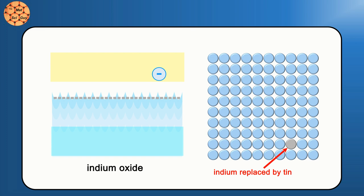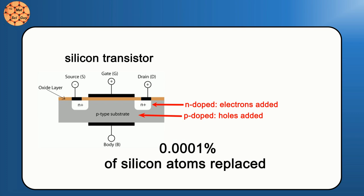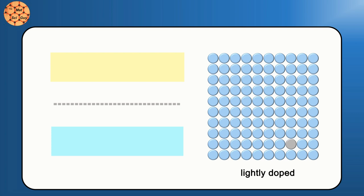This doping process is used to create all sorts of electronics like transistors, but in those cases the doping level is usually relatively light. For example, in silicon electronics, the highest concentration of the doping you'll typically see is about 0.0001%, or one in every hundred thousand atoms. On the other hand, ITO is heavily doped, very heavily doped. About 10% of the indium ions have been replaced with tin.